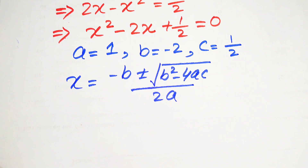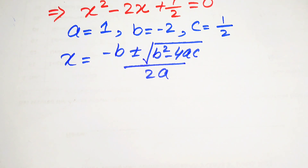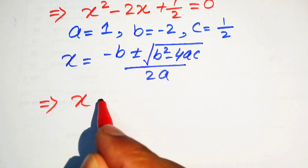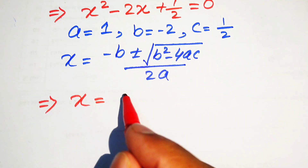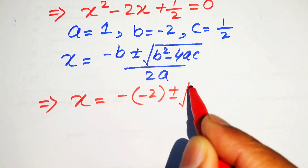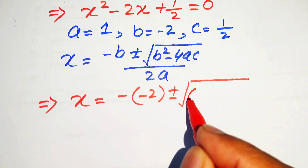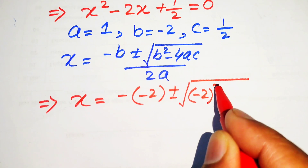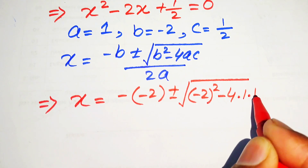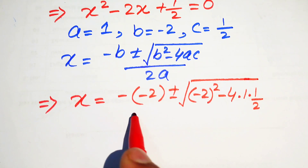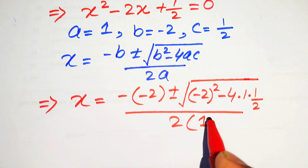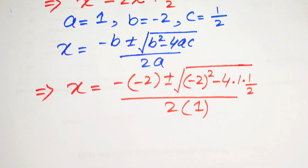We substitute the values of a, b, and c into the quadratic formula: x equals minus (minus 2) plus or minus square root of (minus 2) squared minus 4 times 1 times (1 over 2), all divided by 2 times 1.